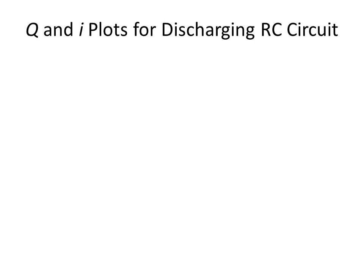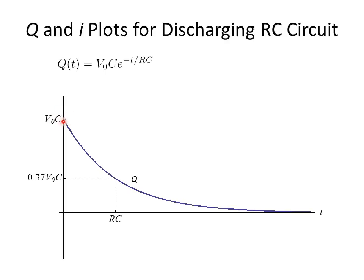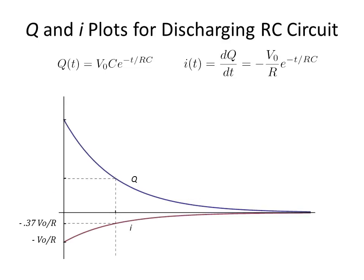If we plot this, like we did before, we can see that we start with our charge up at a value of V-naught C — the charge we placed on the capacitor before we disconnected the battery. As time goes on, we slowly decay off. We notice that 37% of the original value is reached at one time constant. Similarly, the current starts at a negative V-naught over R — flowing in the opposite direction — and as we decay the charge away, at the time constant RC we again drop to 37% of the original value. The current gets smaller and smaller as less charge flows per unit time.